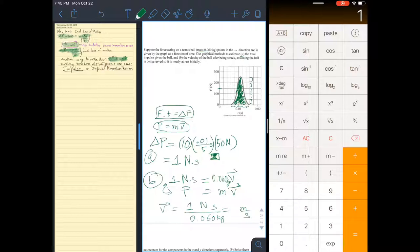So let's see if we can do that. Let's see. Meters per second. 1 divided by 0.060. 16.7 if I round it off, meters per second.